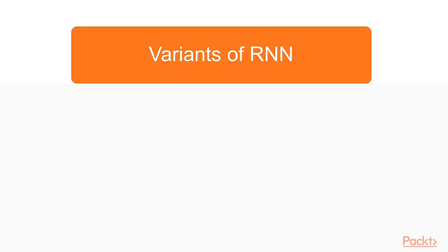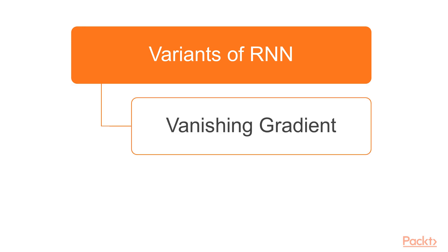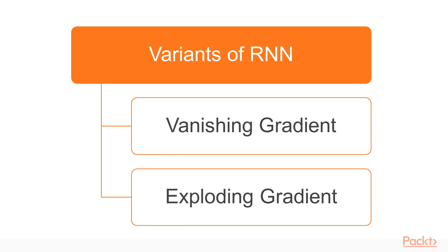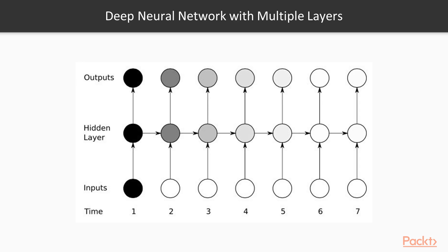Before we go into the demo let's look at a couple of variants of RNN. One of the issues with RNN — actually two related issues — are vanishing gradient and exploding gradient. These are common problems in neural networks generally but they get amplified due to the structure of RNNs. In a deep neural network with multiple layers, by the time the error propagates from the output toward the input, the gradient can sometimes become zero — this is known as vanishing gradient. The opposite, where the gradient is very high and becomes a very large number across multiple layers, is known as exploding gradient.